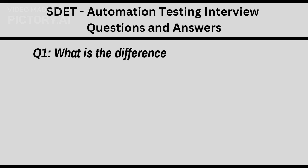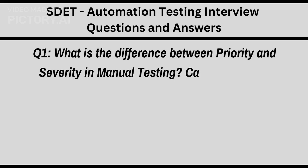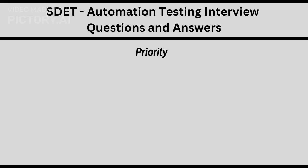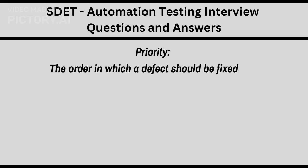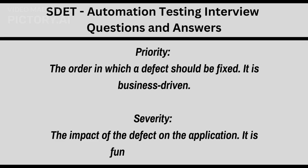Q1. What is the difference between priority and severity in manual testing? Can you provide examples? Priority is the order in which a defect should be fixed — it is business-driven. Severity is the impact of the defect on the application — it is functionality-driven.